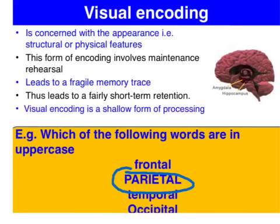This fragile memory trace is highly susceptible to rapid decay. Thus, it's considered a shallow form of processing. Interestingly, visual encoding is largely managed by the brain structure, the amygdala, in the medial temporal lobe.